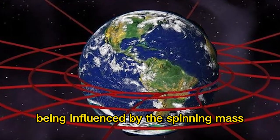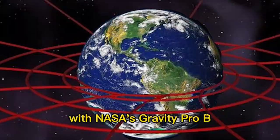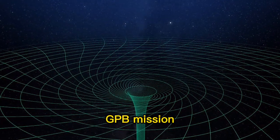This results in nearby objects being influenced by the spinning mass, which was experimentally confirmed on Earth with NASA's Gravity Probe B mission.